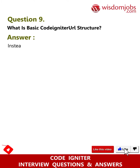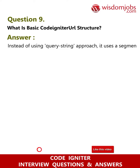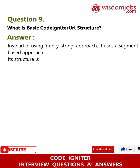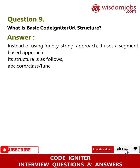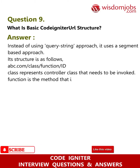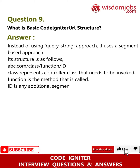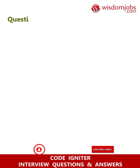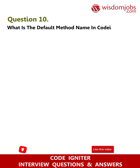Question 9: What is the basic CodeIgniter URL structure? Answer: Instead of using a query string approach, it uses a segment-based approach. Its structure is: abc.com/class/function/ID. Here, 'class' represents the controller class that needs to be invoked, 'function' is the method that is called, and 'ID' is any additional segment that is passed to the controller.